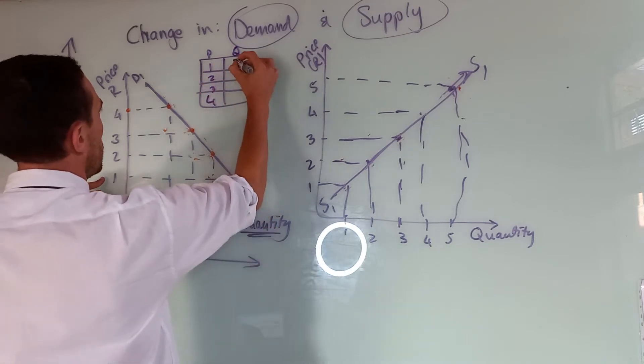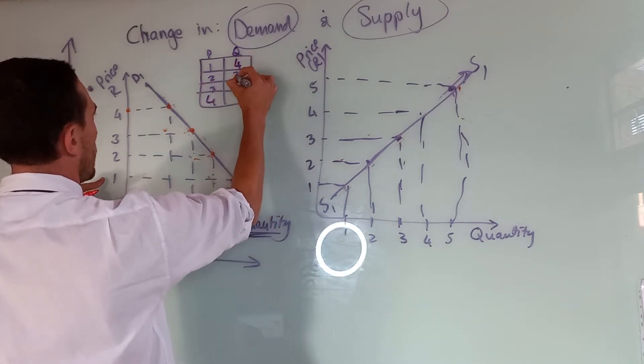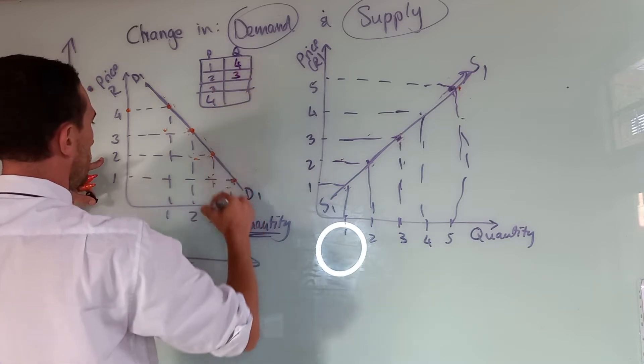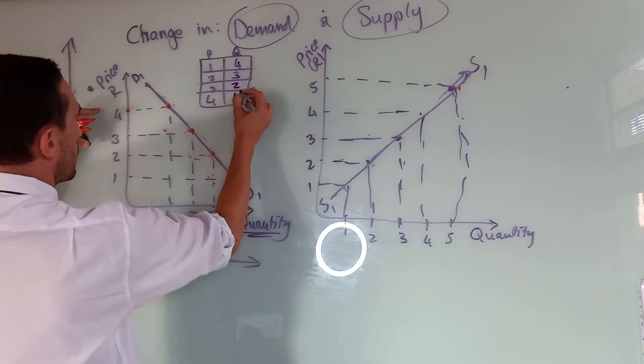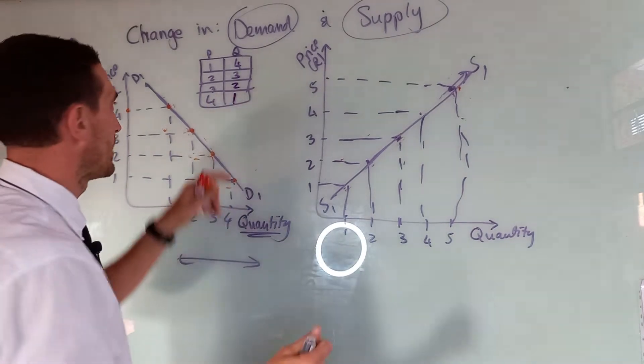At one rand, the quantity demanded is at four. At two rand, the quantity demanded is three. At three rand, the quantity demanded is two. And at four rand, the quantity demanded is one. So it's always the relationship between the two.